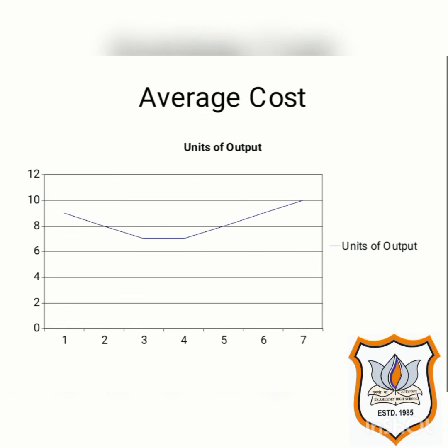When this trend of average cost is plotted in a diagram, we get a U-shaped curve. As you can see, on the x-axis, units of output are shown, and on the y-axis, average cost is shown. As said earlier, initially with an increase in production, average cost decreases. Then at a particular level — at the third and fourth unit — it attains its minimum level. Especially after the fourth unit, with an increase in production, average cost also increases. This is why the average cost curve becomes U-shaped.